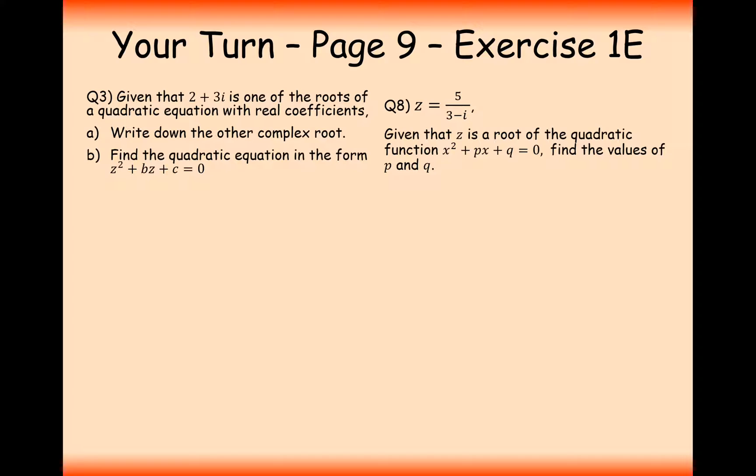Let's have a go at question 3. Given that 2 plus 3i is a root of a quadratic equation with real coefficients, write down the other complex root. Well, the other complex root, given that the two complex roots need to be complex conjugates of each other, is 2 minus 3i. That is the other root of this quadratic equation. Then part b is find the quadratic equation.